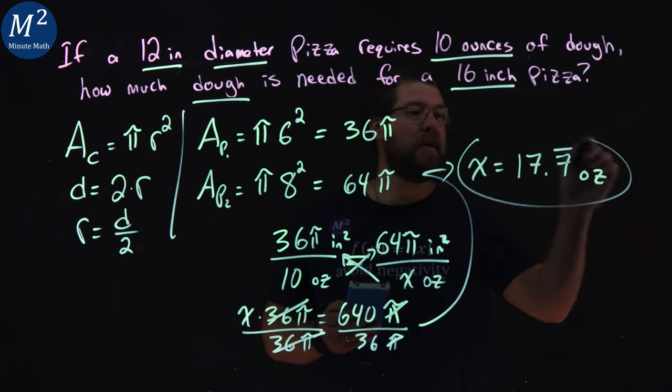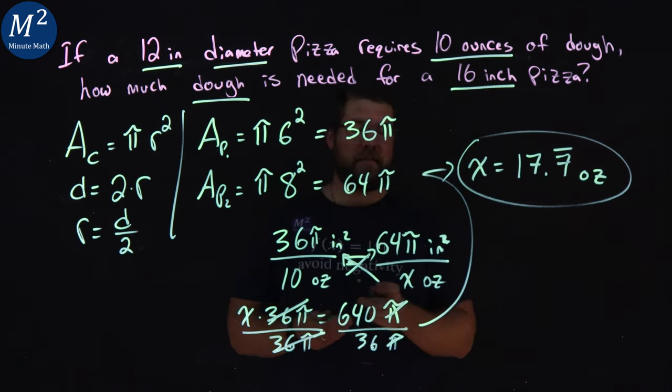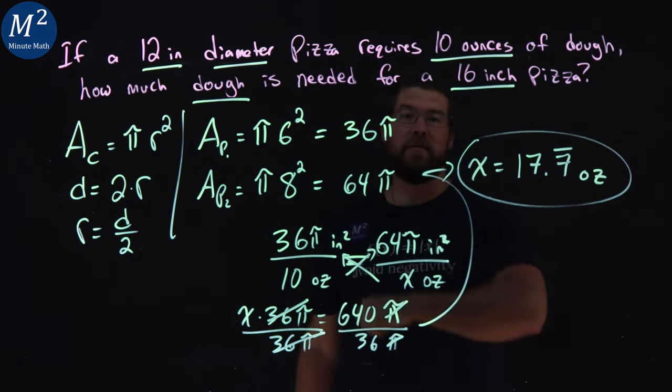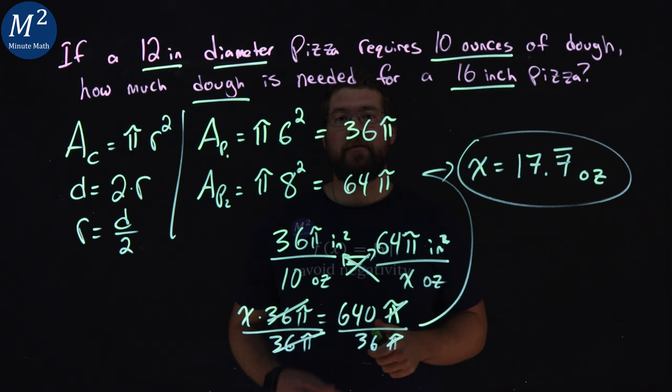And so, here, a 16-inch pizza would require 17.7 repeated ounces of dough.